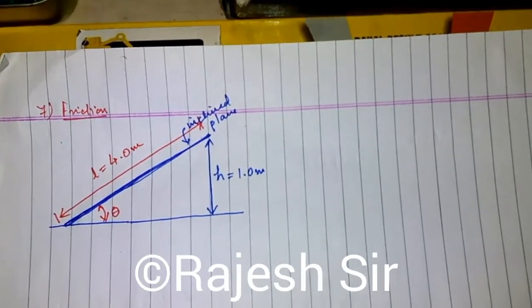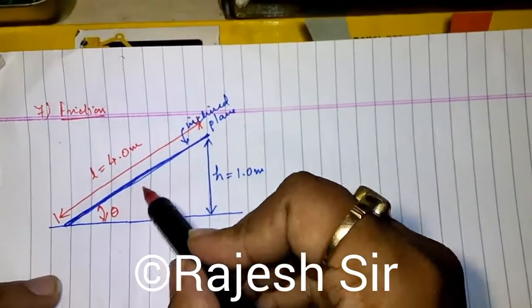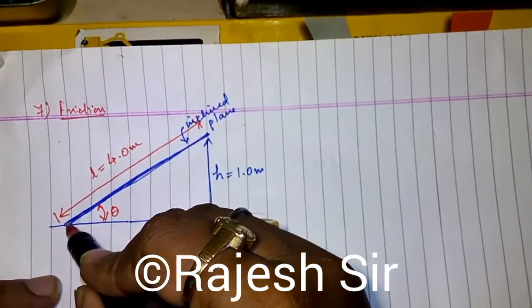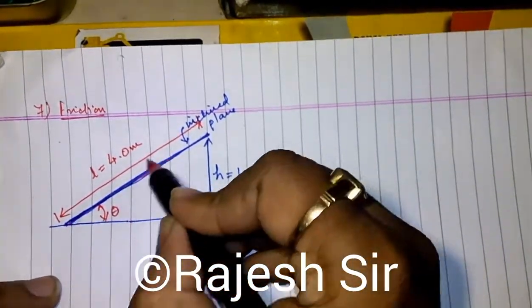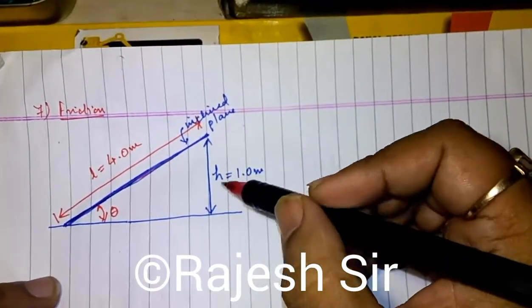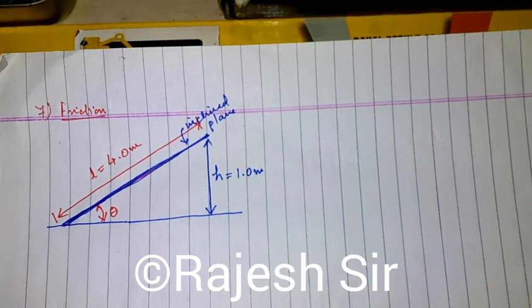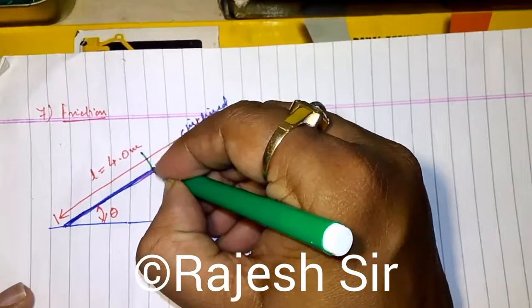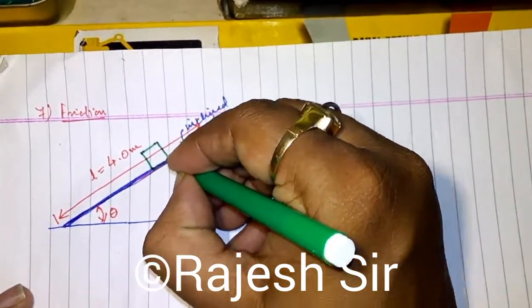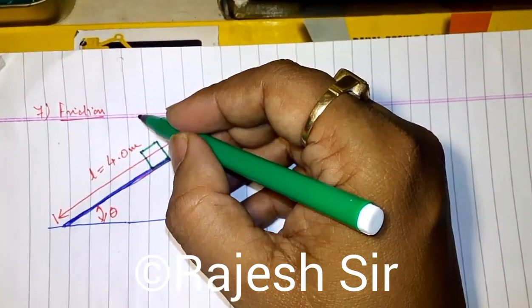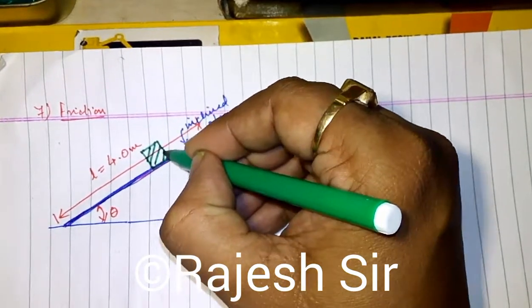Friends, you can see here that it is a rough inclined plane and this plane's length is 4 meters and this height is 1 meter. If I put a block on this inclined plane, it just begins to slide.